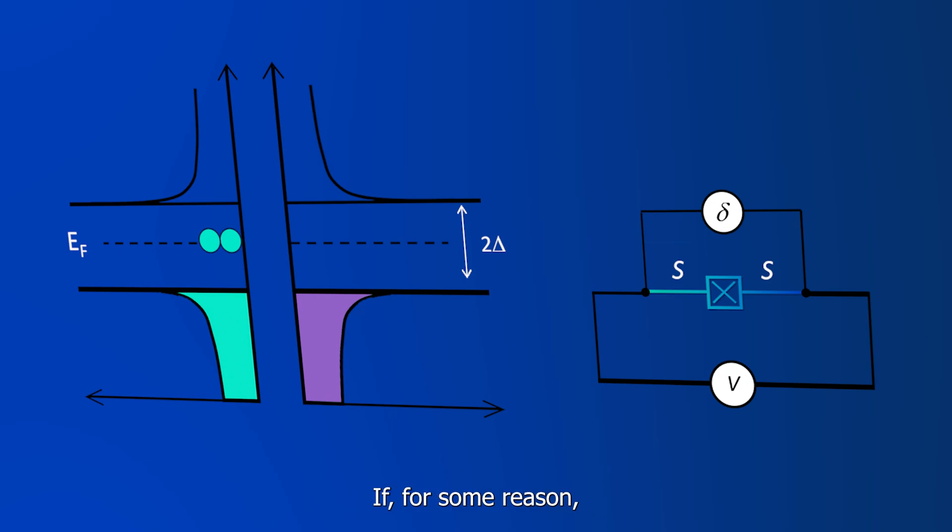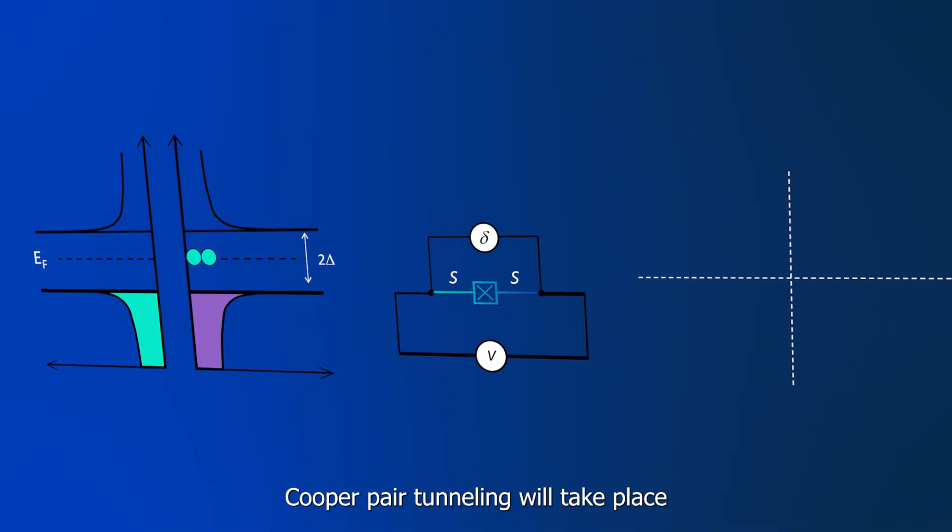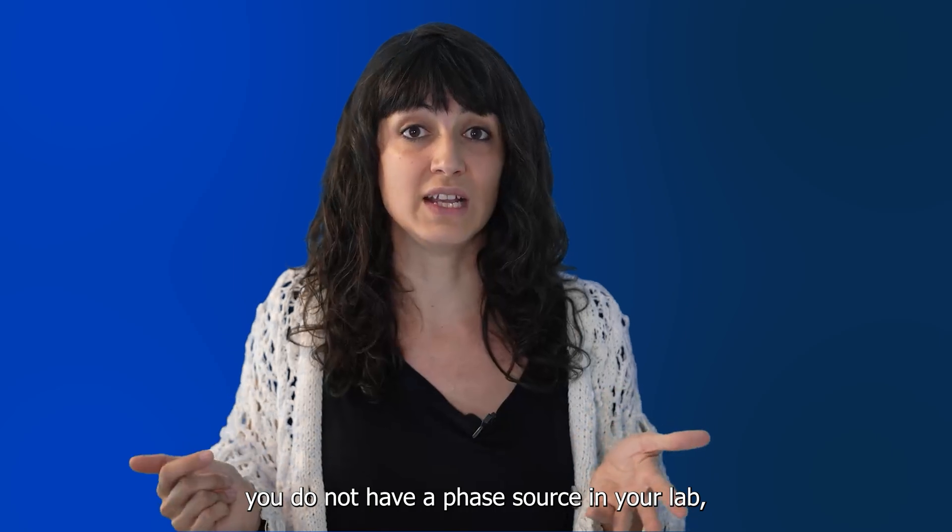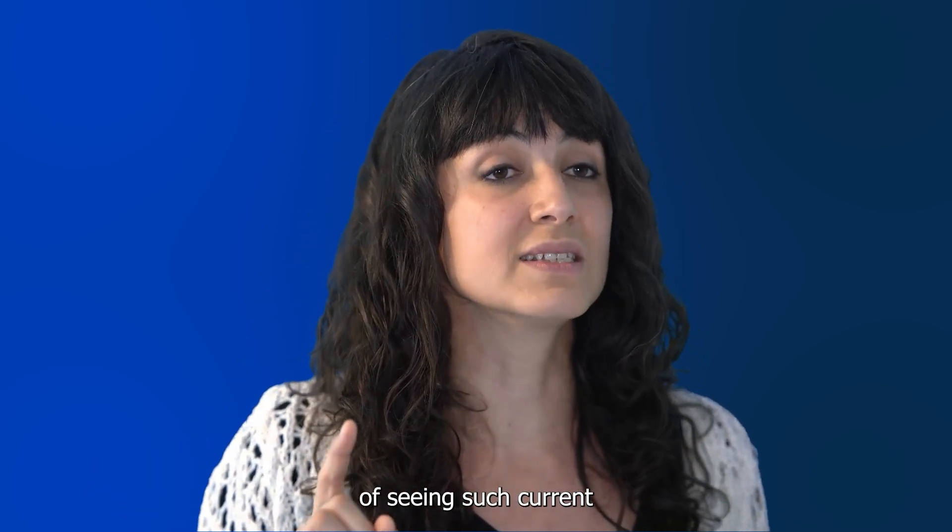If, for some reason, there would be an additional phase bias, Cooper pair tunneling will take place and supercurrent will arise, even at zero voltage. However, in normal circumstances, you do not have a phase source in your lab, so probably you will not be able of seeing such current.